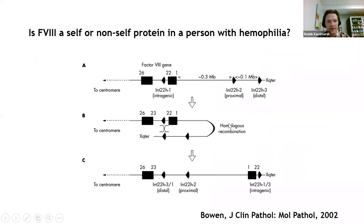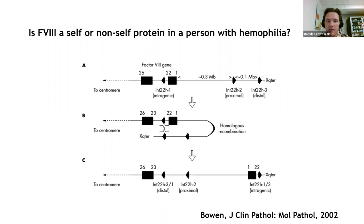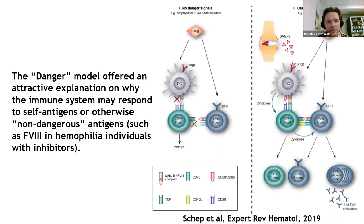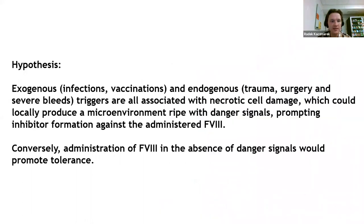The danger model became an attractive framework for formulating hypotheses on inhibitor formation because it addresses many puzzling aspects of that phenomenon. For one thing, factor VIII is not infectious, and except for large gene deletions, it is difficult to really call it foreign, even in individuals with intron inversions. The hypothesis would be that exogenous and endogenous triggers like infections, vaccination, surgery, or severe bleeds generate necrotic cell damage, and consequently danger signals that could prompt the immune response to the clotting factor, with the factor becoming a collateral victim of that response.